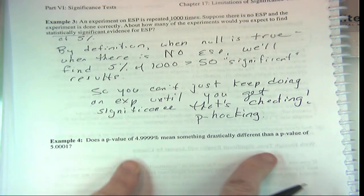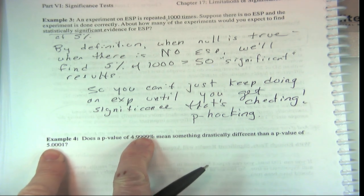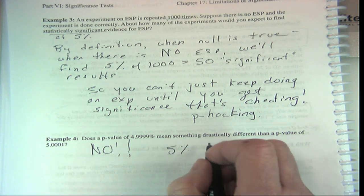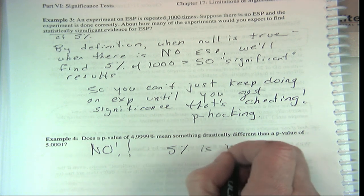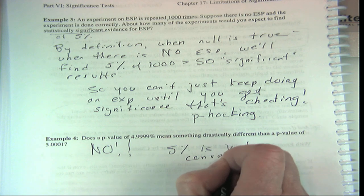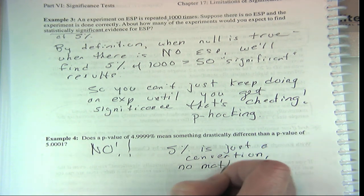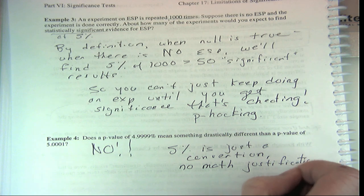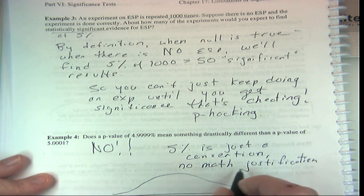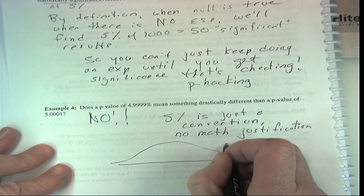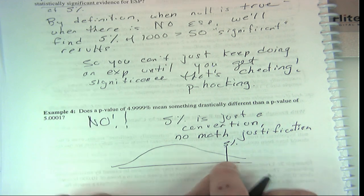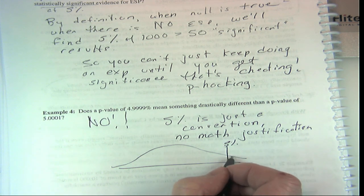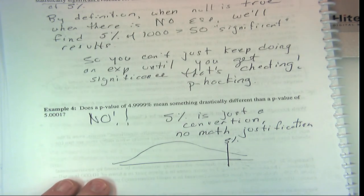The 5% cutoff is just a convention — there's no mathematical justification for it. There's no sharp drop-off at 5%; it's a continuum. Why pick 5% and not something else? That leads us to the next section: Type I and Type II errors.